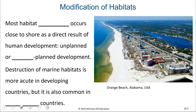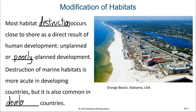As humans, one of the things we do is to modify natural habitats. This often results in their destruction, and most habitat destruction occurs close to shore as a direct result of human development. Sometimes this is unplanned or poorly planned development. Destruction of marine habitats is more acute in developing countries, but it is also common in developed countries as well. Here you can clearly see this coastline is no longer performing the natural functions it did on the coast of Alabama before human development.